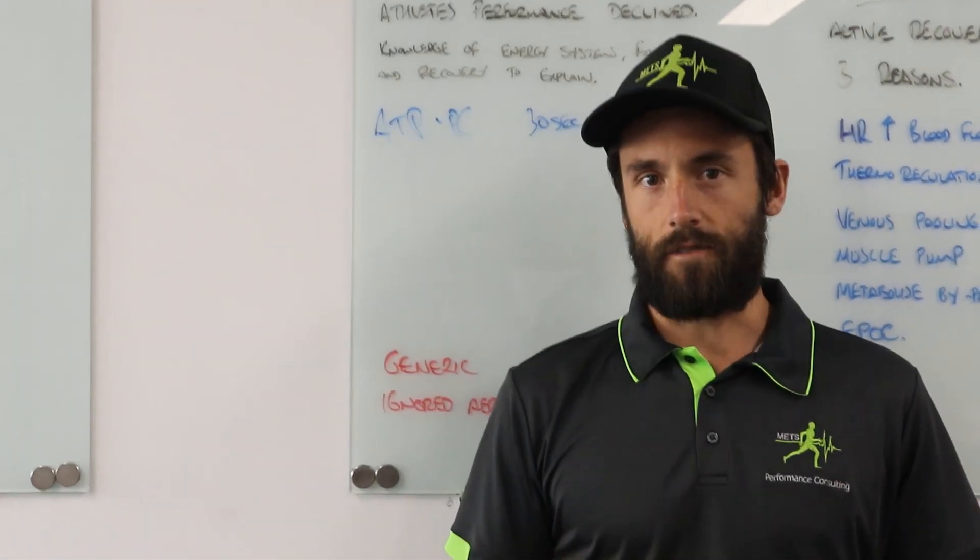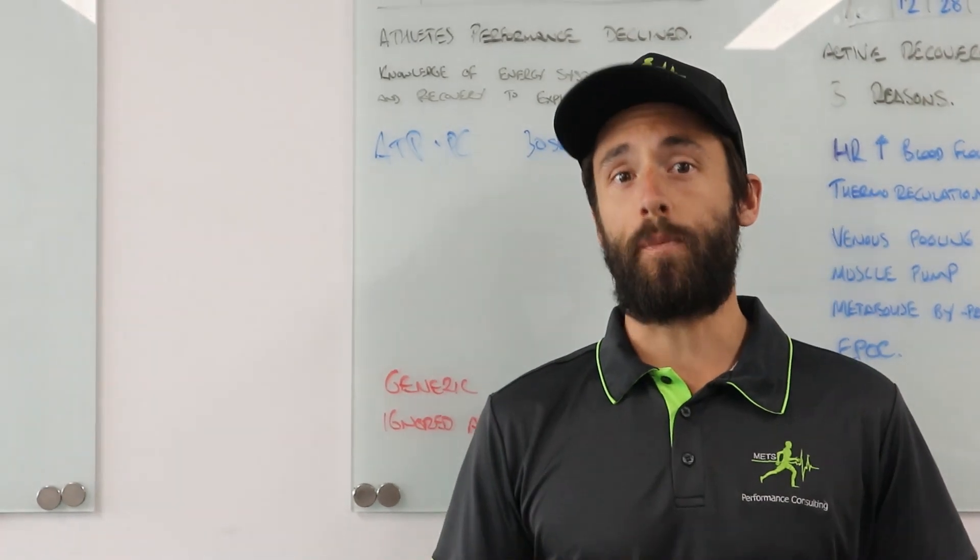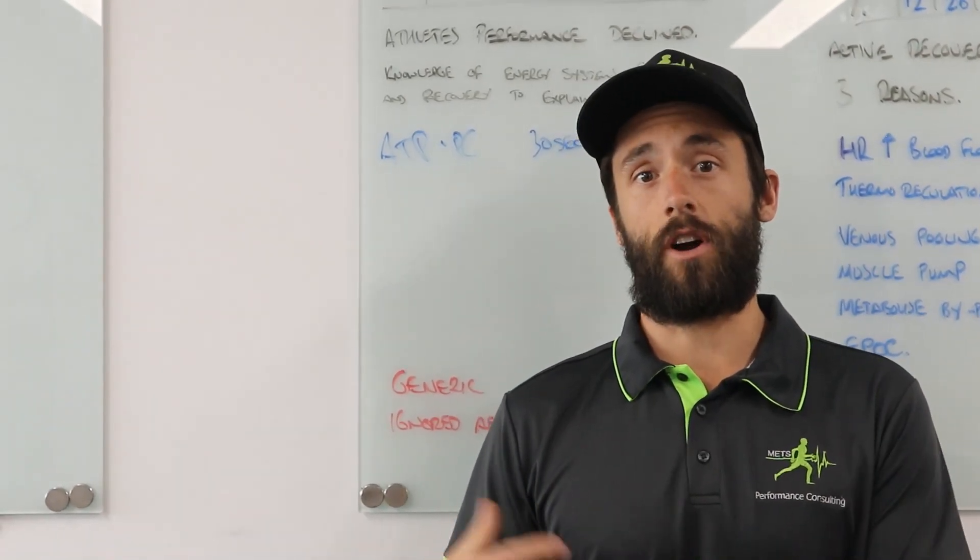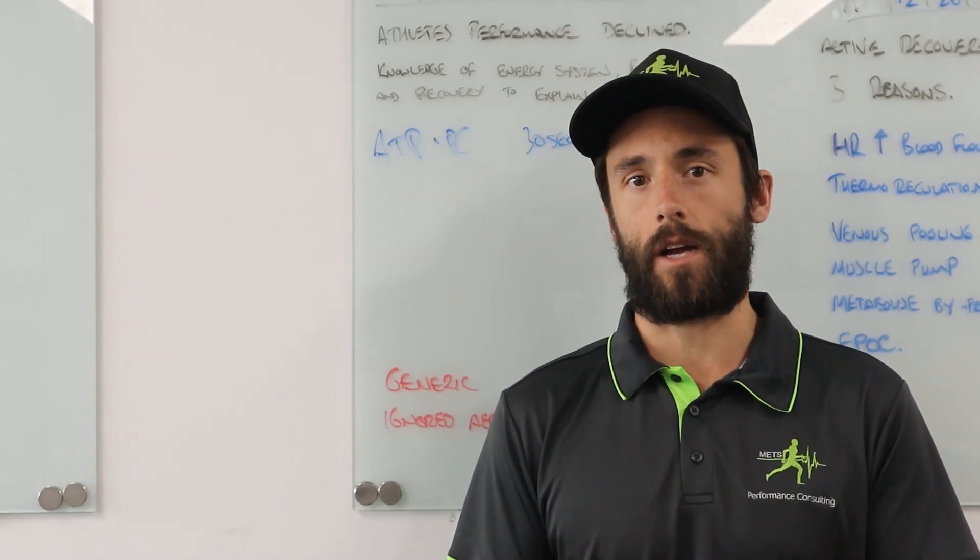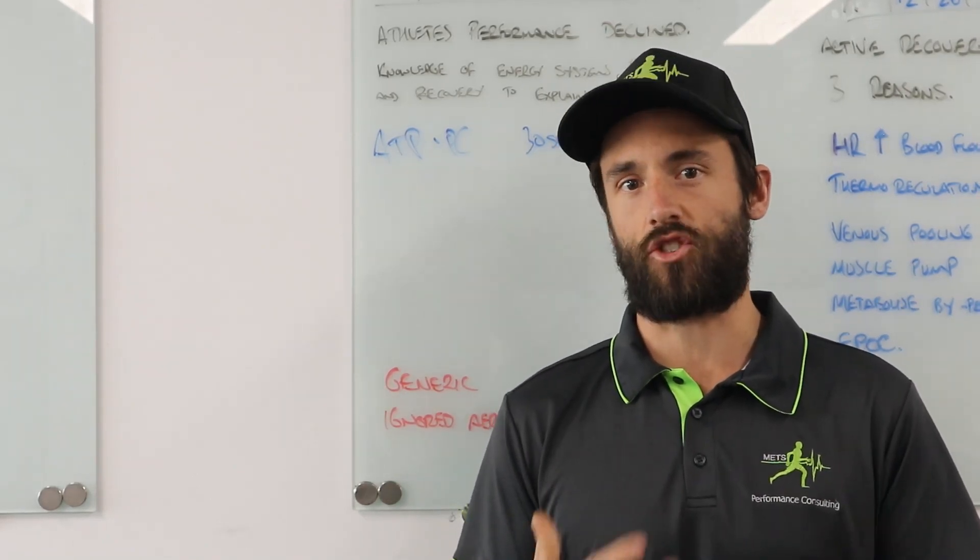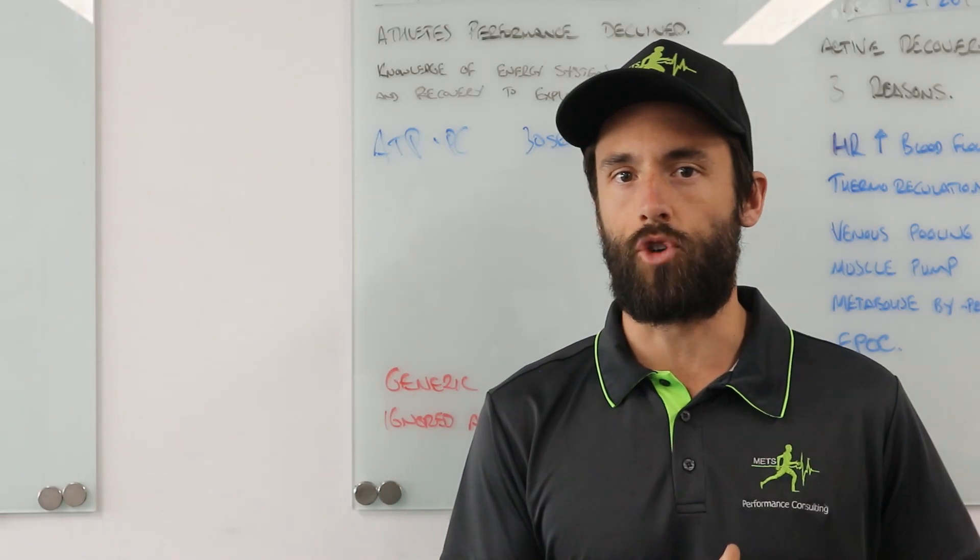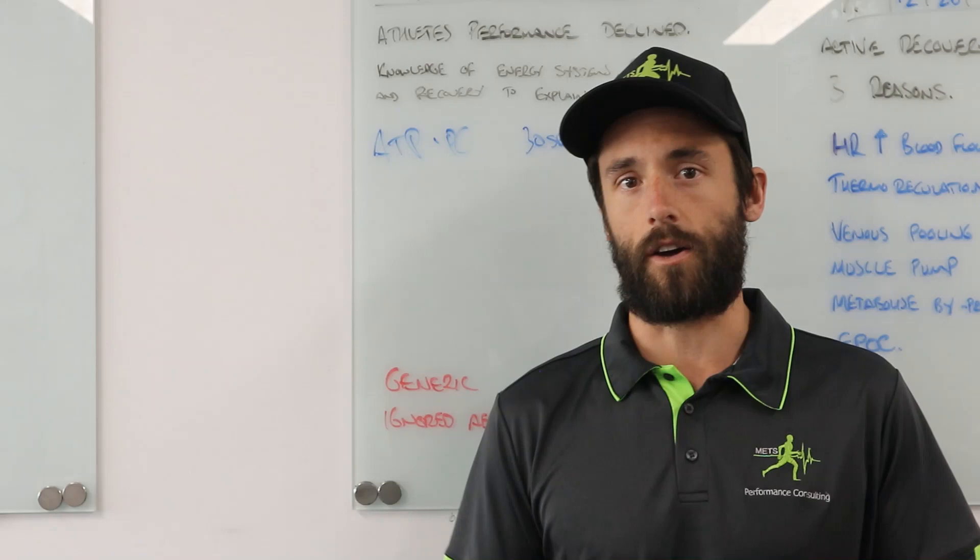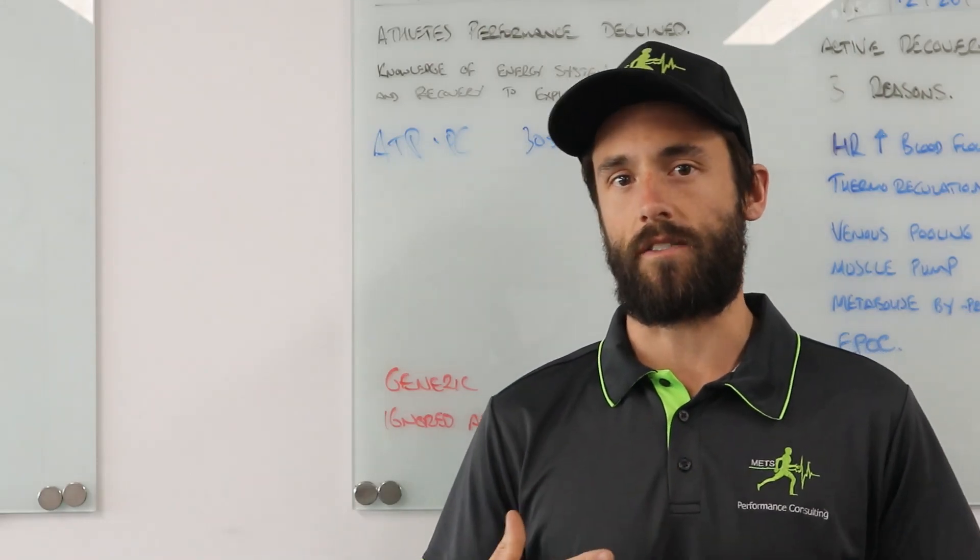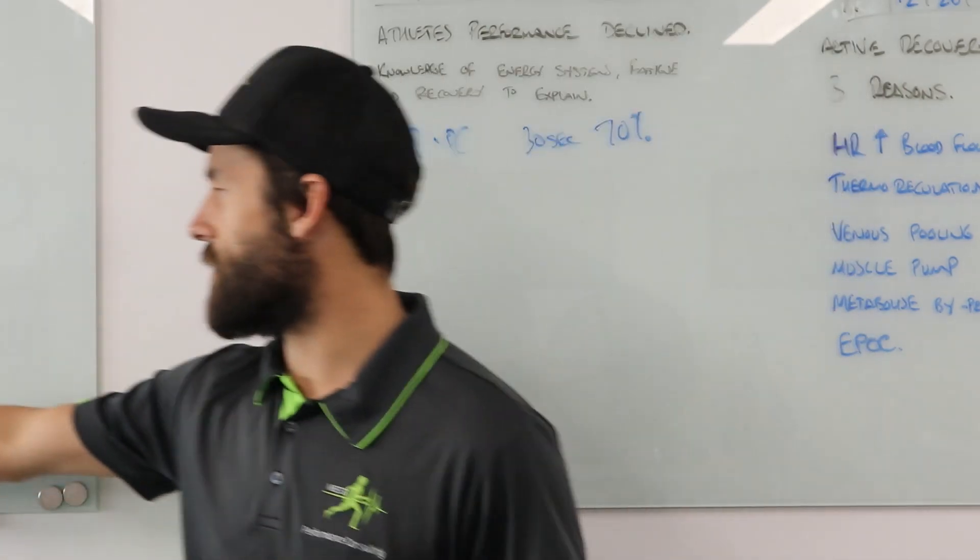So we've dropped off from eight at the start, we're down to five here. Now the flow on from this, as the anaerobic glycolysis system increases its contribution for longer in each sprint, we're going to start to see an accumulation of metabolic byproducts. We just need to be able to say that, I wouldn't be going into hydrogen ions and glycolytic enzyme at this point.